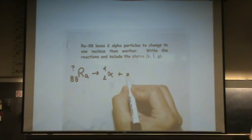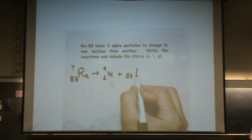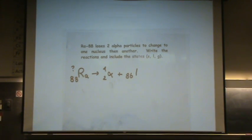So when it decays, it will have to go down to 86. And that is radon. Whatever the mass number, 4 less than what it started with.